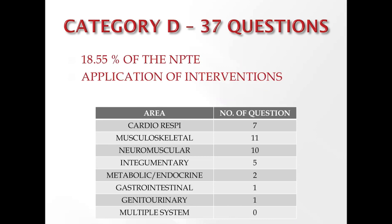Category D involves questions related to interventions on adult and pediatric populations, with 37 questions totaling 18.5% of the NPTE exam. It focuses on motor control, motor learning, physiological response to interventions, and sequencing and application of appropriate interventions. Subcategory breakdown: cardio 7, musculoskeletal 11, neuromuscular 10, integumentary 5, metabolic or endocrine 2, gastrointestinal 1, genitourinary 1, and multiple system involvement 0.